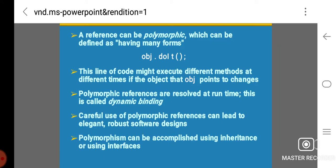A reference can be polymorphic, which can be defined as having many forms. A line of code might execute different methods at different times if the object that it points to changes. Polymorphic references are resolved at runtime. This is called dynamic binding. Careful use of polymorphic references can lead to elegant, robust software designs. Polymorphic references can be accomplished using inheritance or using interfaces.